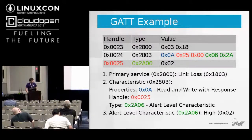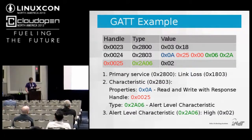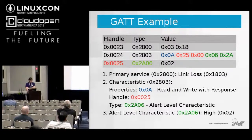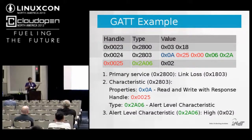UUID 0x2A06 is the Alert Level characteristic, one of the characteristics in the Link Loss service. Handle 0x25 holds the value of that characteristic — UUID 0x2A06 again — with a value of 2, which for this characteristic means alert level high. This is how every GATT service is grouped and defined.